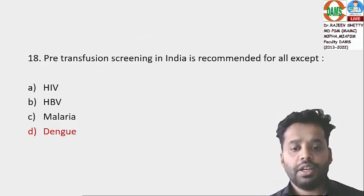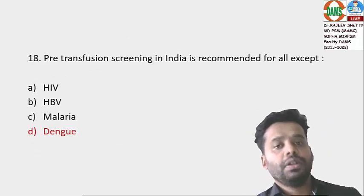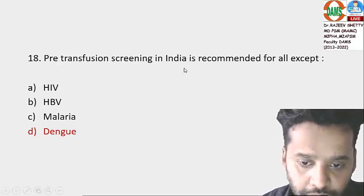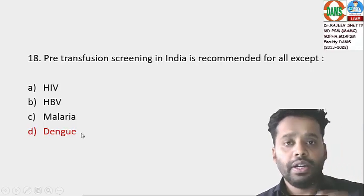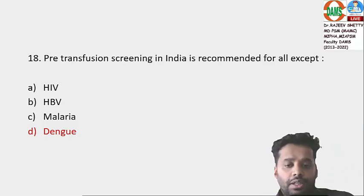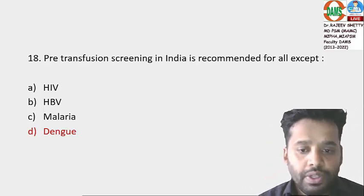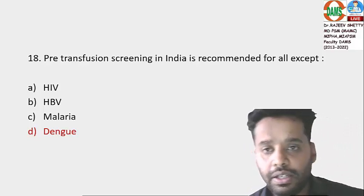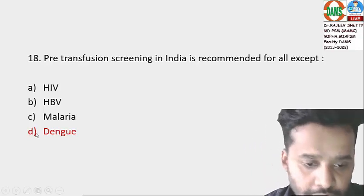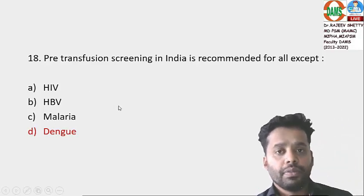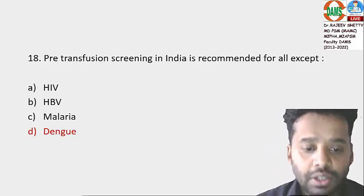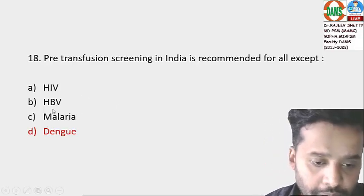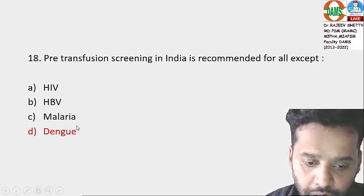Before blood transfusion, what do we screen for in India — all except was the question. We screen for transfusion transmissible infections (TTI): HIV, hepatitis B, hepatitis C, and malaria. We do not screen for dengue in India. Other countries' guidelines may differ.